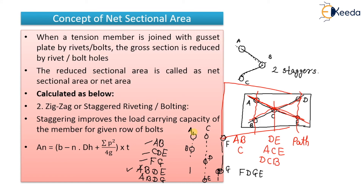For path A-B-D-G: going from A to B is vertical — no stagger. B to D is diagonal — one stagger. D to G is diagonal — one more stagger. So there are two staggers in this path. For path F-D-G-E, going diagonally three times, there are three staggers. However many staggers there are in a path, that many times you take the P²/4G term.